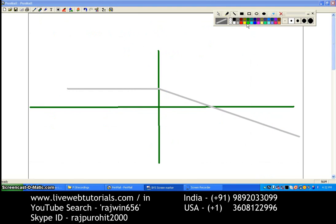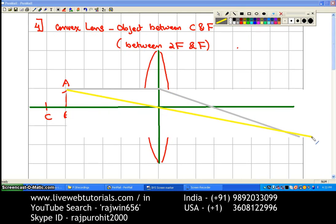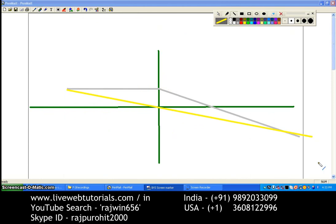The second ray that I'm drawing through point A is passing through the optical center. Now this ray will travel without suffering any deviation.